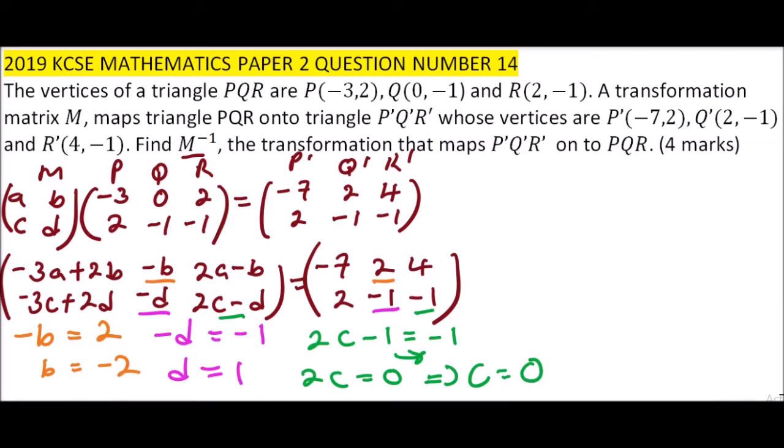If C equals 0, then what is remaining is, we can say that this element here is equals to 4. So 2A, but we already know B is -2. So minus -2 equals 4. Therefore, we say that 2A, this will become positive. We take it to the other side, becomes negative. So we get 4 - 2, you get 2. Divide both sides by 2, you get A equals 1.